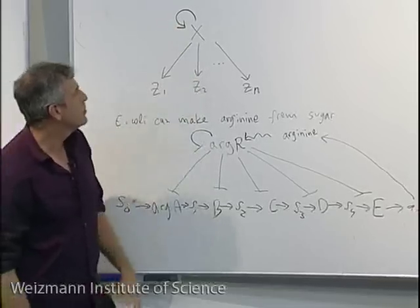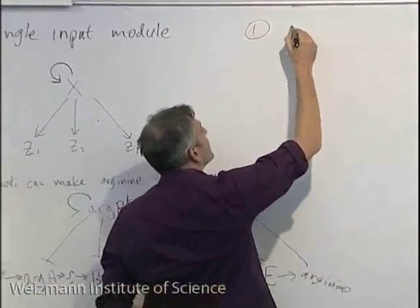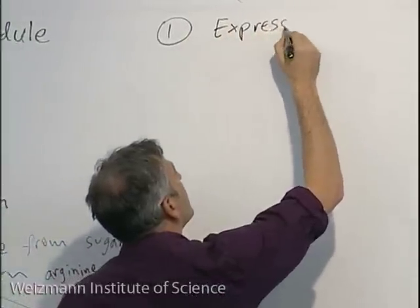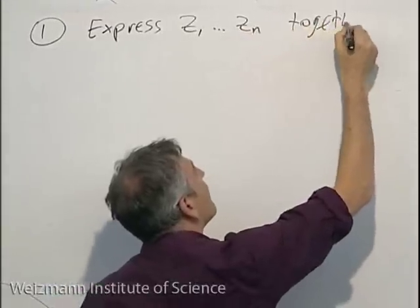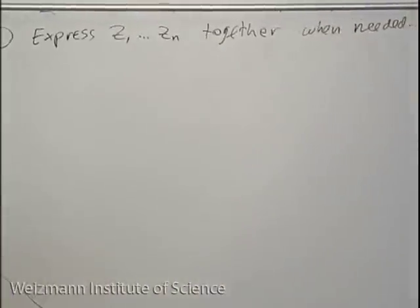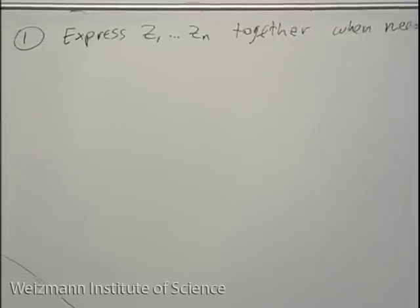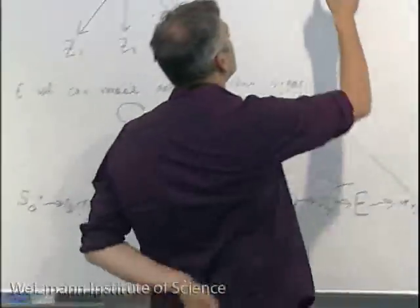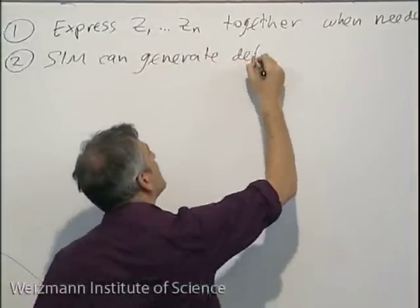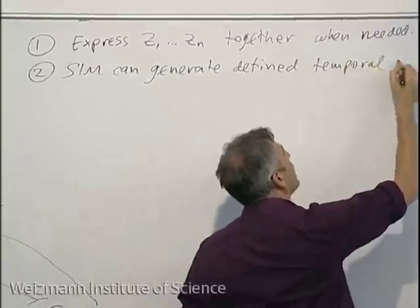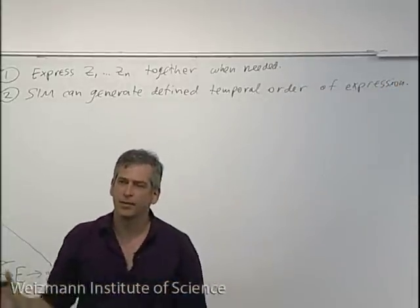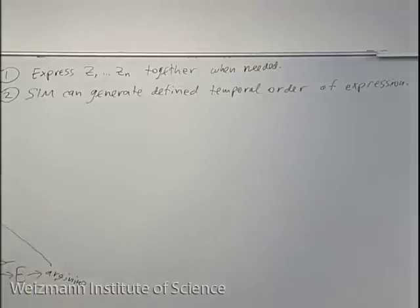The single input module has one obvious function: to express Z1 through Zn together when needed. But it also has a more subtle dynamical function: the SIM can generate a temporal order of expression — an order of making these gene products. Let's analyze that function.